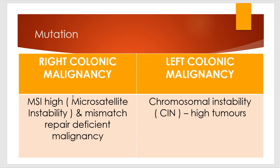Whereas in left colonic malignancy, the key abnormality is chromosomal instability — CIN — meaning the whole chromosome is unstable. In right colonic malignancy, only that particular microsatellite strand was instable; but in left colonic malignancy, the entire chromosome is unstable — CIN-high tumors — with deletions, inversions, or other mutations affecting the whole chromosome. This is a very basic and important difference regarding mutation, and it also affects prognosis.